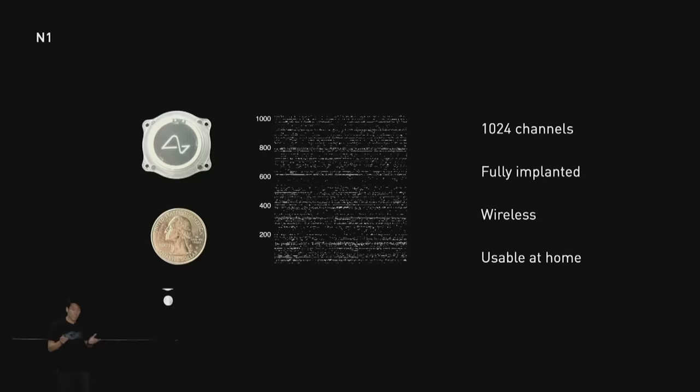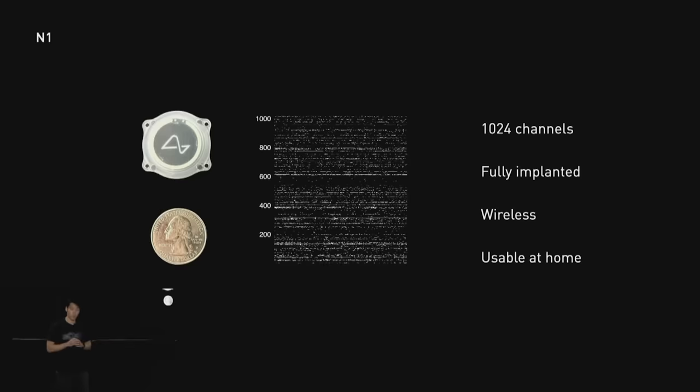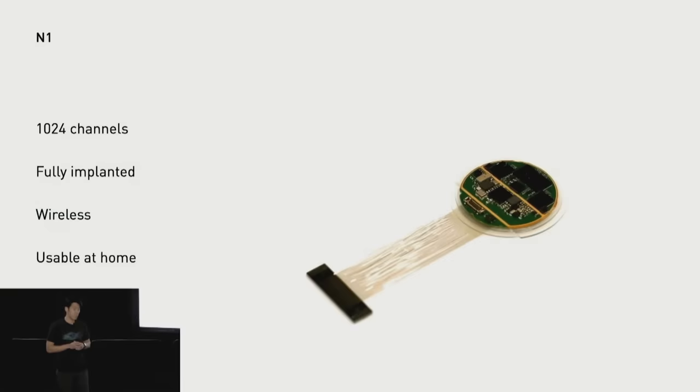So our first steps along these dimensions for our device is what we call the N1 implant. It's the size of about a quarter, and it has over 1,000 channels that are capable of recording and stimulating. It's microfabricated on a flexible thin-film arrays that we call threads. It's fully implantable and wireless, so no wires, and after the surgery, the implant is under the skin and it is invisible. It also has a battery that you can charge wirelessly and you can use it at home.